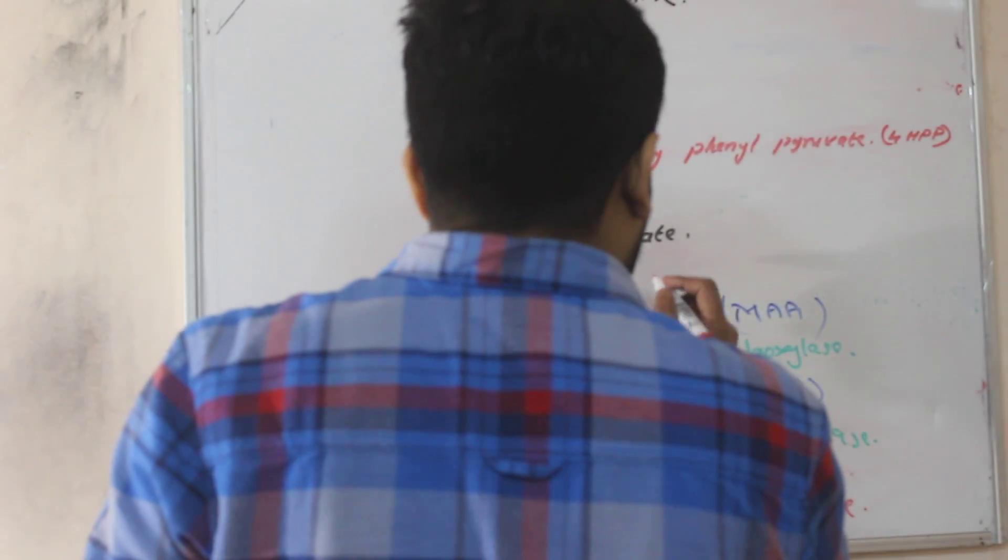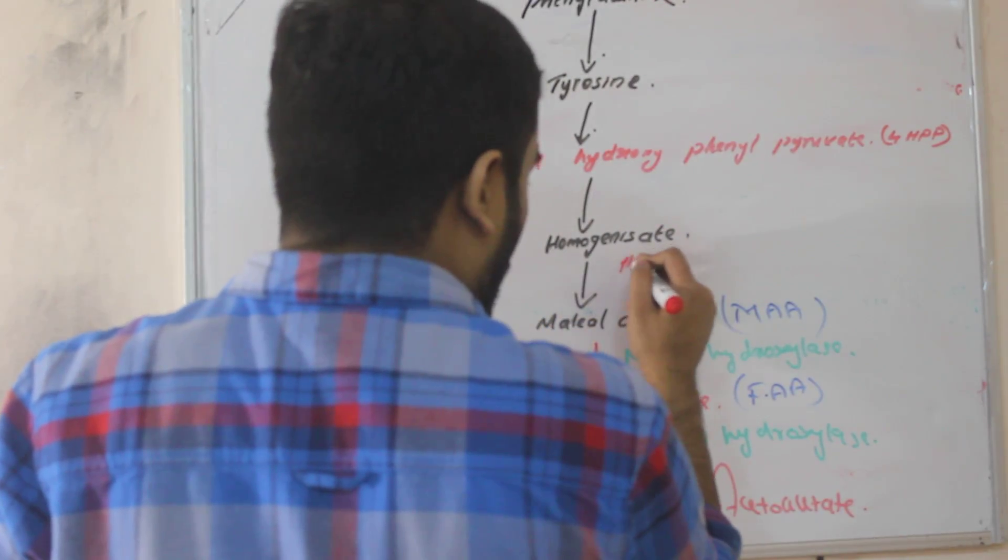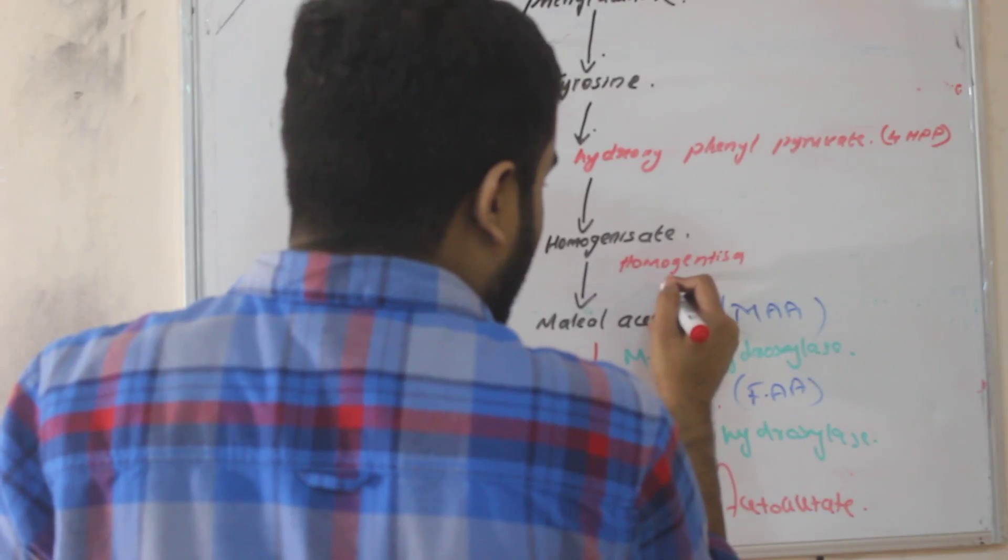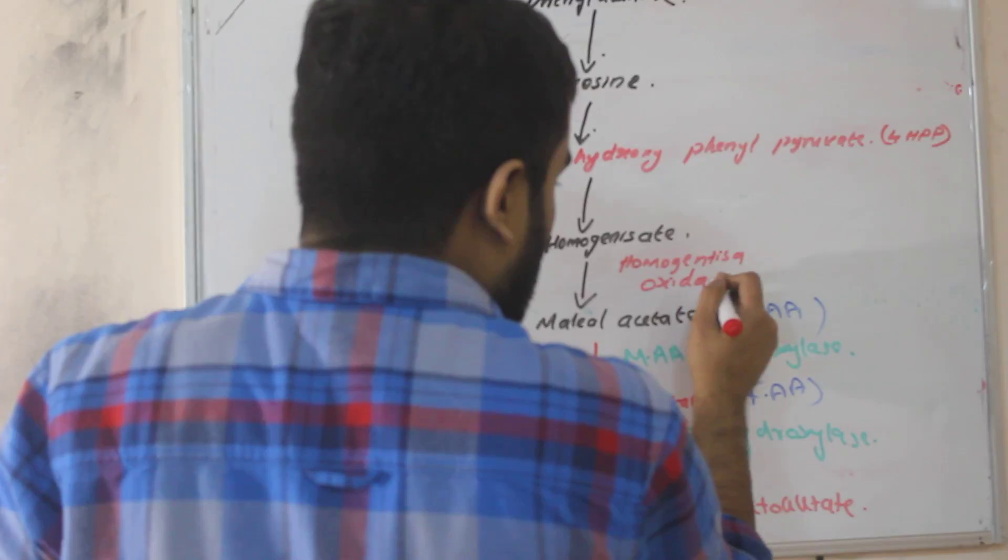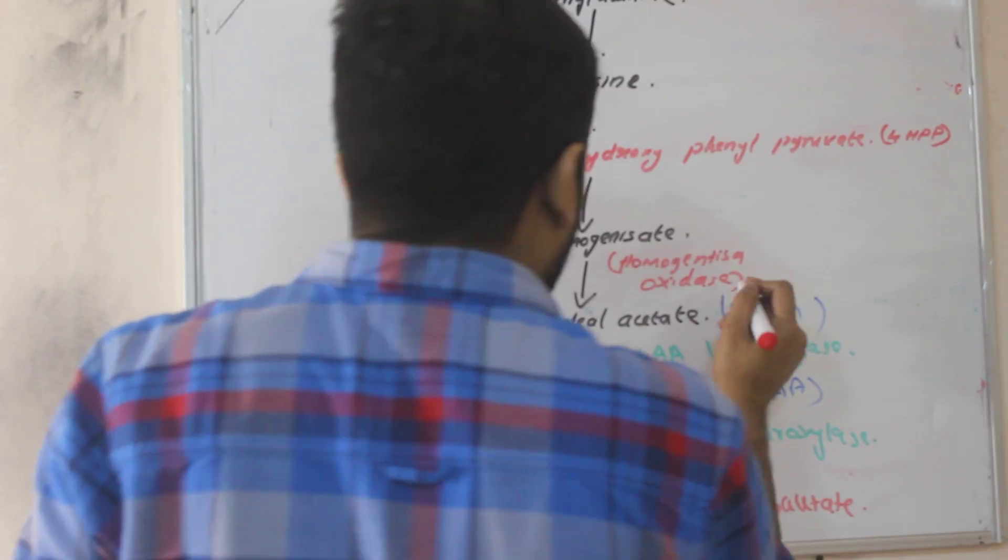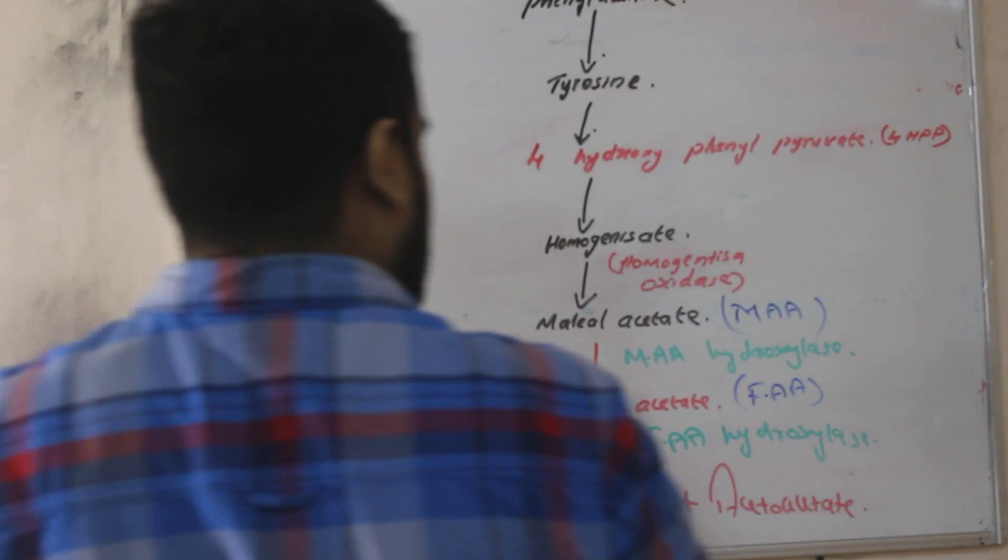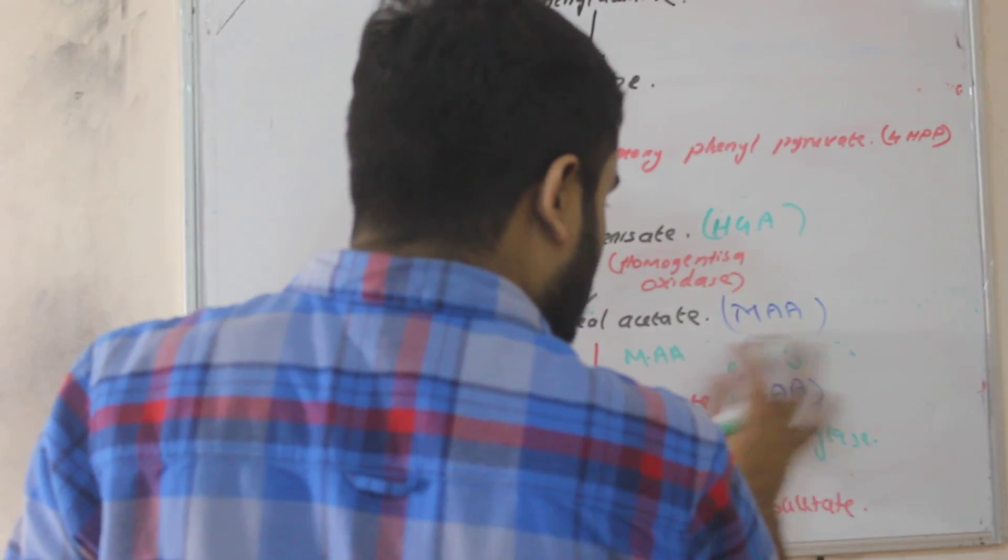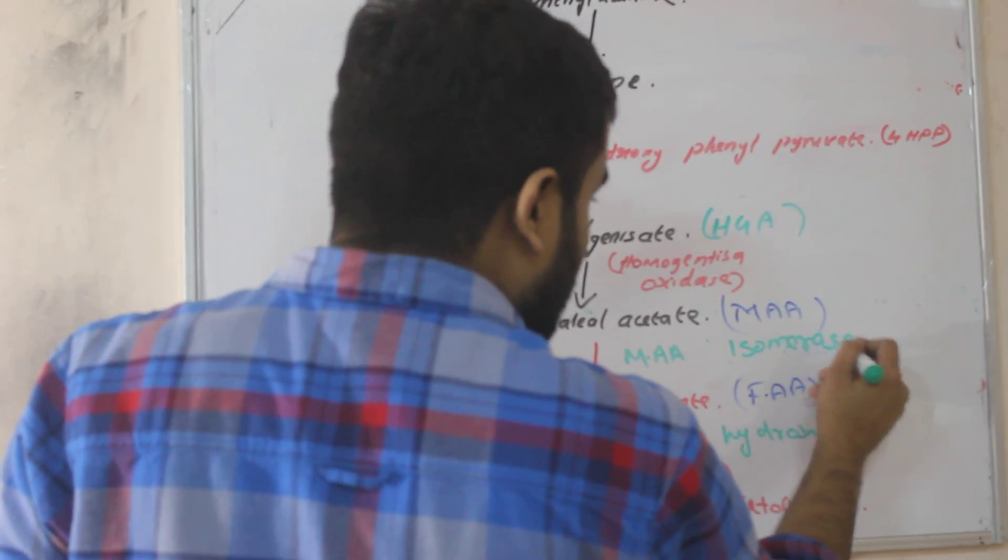Now homogentisate will become maleoacetate by homogentisate oxidase. You can represent homogentisate as HGA. It is not hydroxylase, MAA isomerase. Clear?